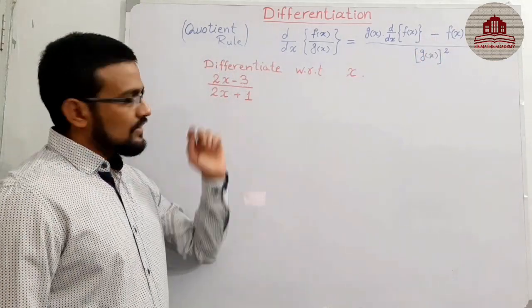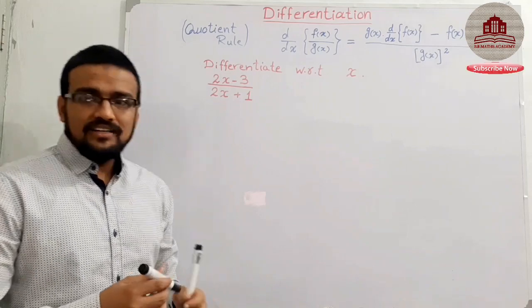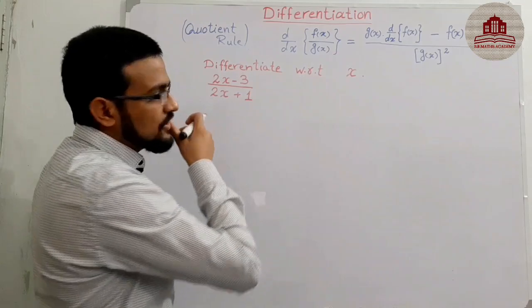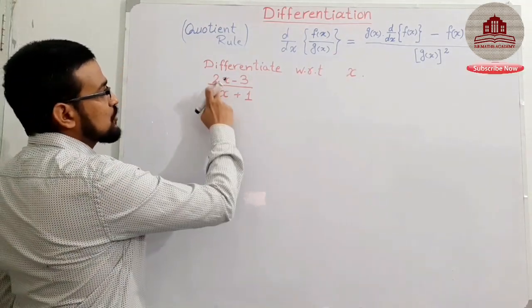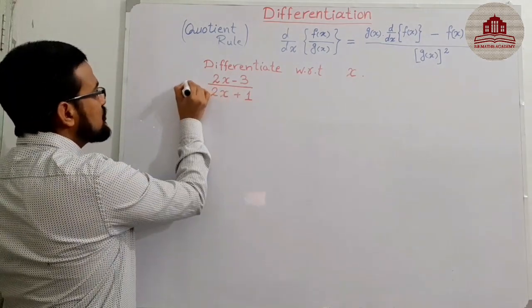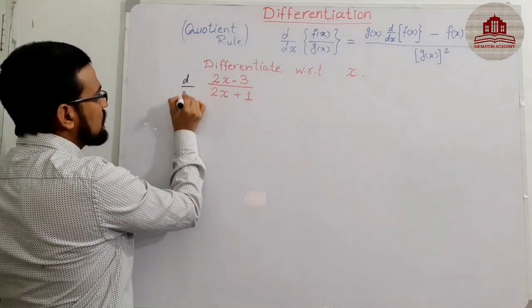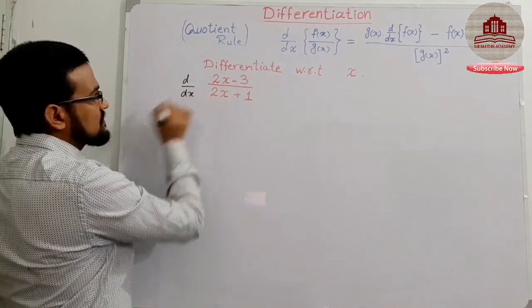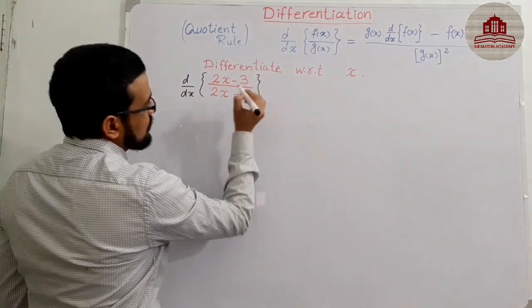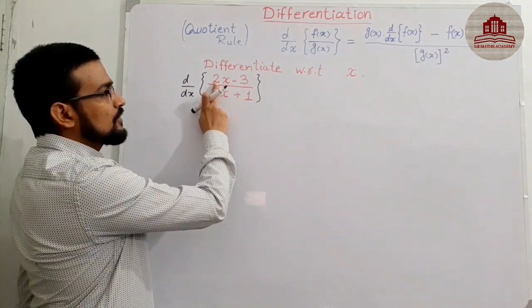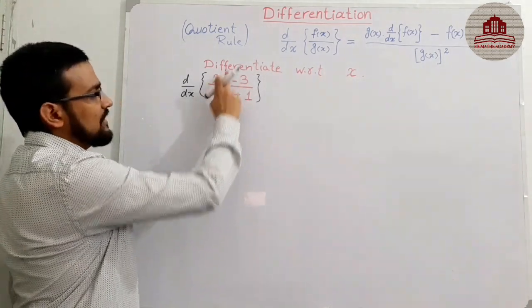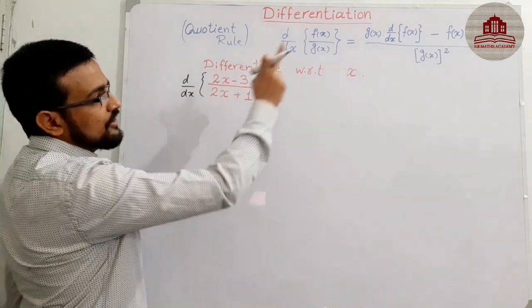So let's start this question. Differentiate with respect to x: (2x − 3) divided by (2x + 1). It means d over dx of this one. You see that 2x − 3 is the numerator and 2x + 1 is the denominator — these are two different functions, and according to the rule we apply the quotient formula.